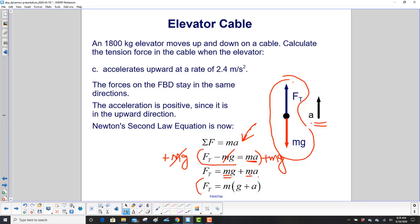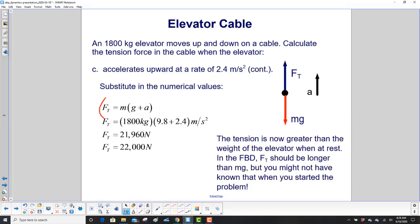Now we substitute in the numerical values. Here's our mass 1800 kilograms, gravitational acceleration 9.8, and our acceleration of the elevator. Units-wise, kilogram meters per second squared, another name for that is newtons. So we get 21,960 newtons, which we round up to 22,000 newtons. What do we notice? The tension is now greater than the weight of the elevator when it rests. That means this term here is actually bigger than mg. Our diagram doesn't show that - not a big deal, we didn't know ahead of time.